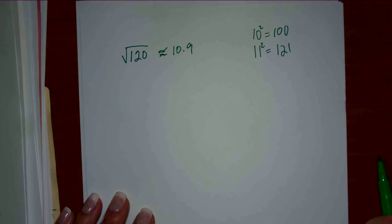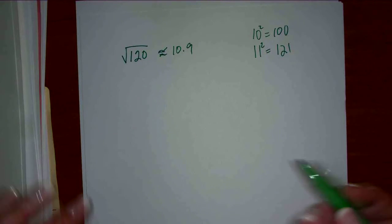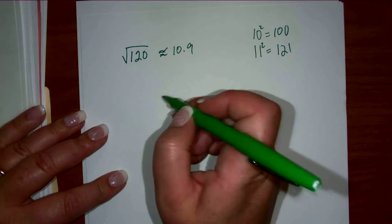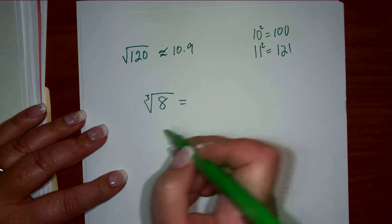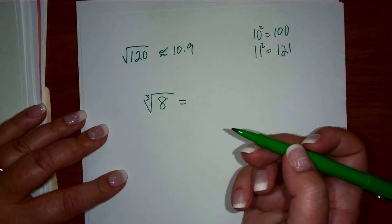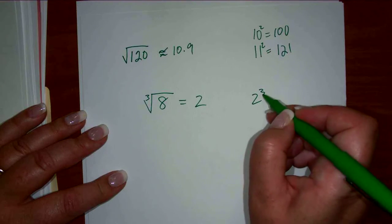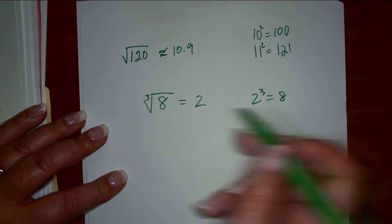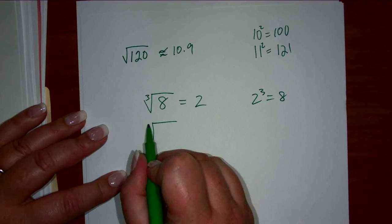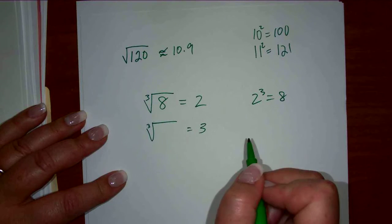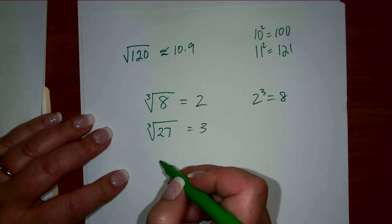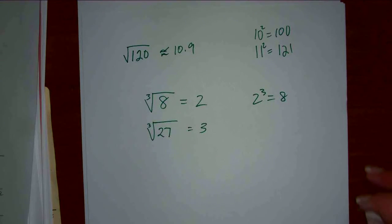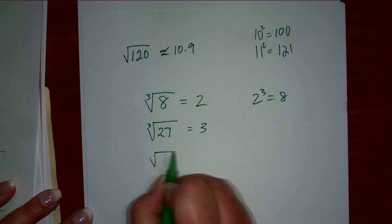What about cube roots? If I had the cube root of 8, that's 2, because 2 cubed is 8 — 2 times 2 times 2. What's the one that's 3? 3 times 3 times 3 is 27. Then they get harder, but you could figure it out. Tens are easy — if I put a thousand in here, the cube root of a thousand is 10.